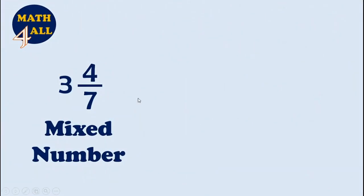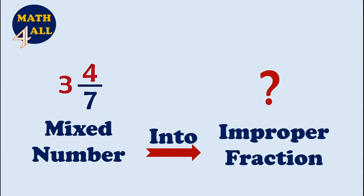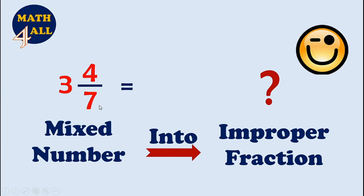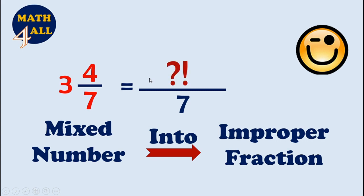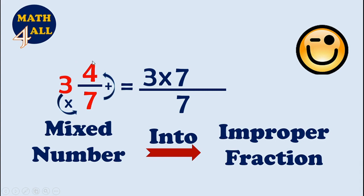Let's practice more. We will convert this mixed number into an improper fraction. Let's read it: three and four-sevenths. First, write the same denominator — it will be seven. Now, to get the numerator, multiply the whole number by the denominator: three times seven equals twenty-one. Then add the numerator: twenty-one plus four.